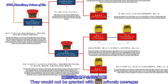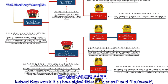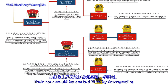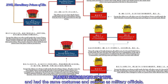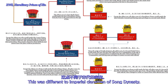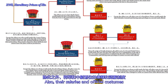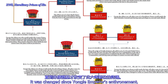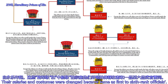They would not be granted any princely titles; instead they would receive the title of General or Lieutenant, which cannot be inherited. Their sons would receive the title by downgrading and have the same costumes and salaries as military officers. Although using the names General and Lieutenant, they had no actual military duties — this was different from the imperial clansmen of the Song Dynasty. Their salaries and official costumes were equivalent to third- through eighth-ranked officers under Hongwu's system, which was later changed since the Yongle Emperor's era to first- through sixth-ranked officers.